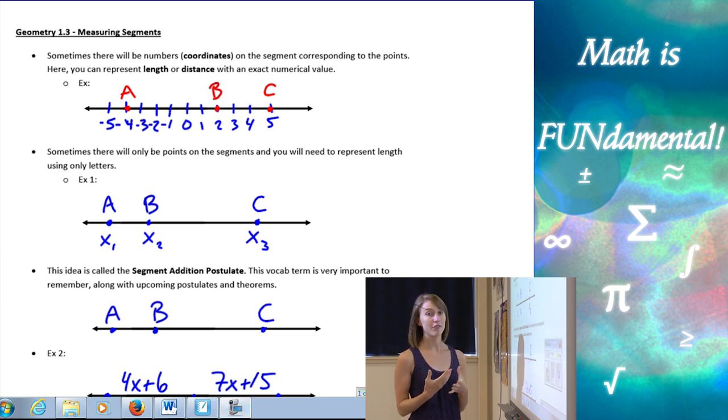So we're just going to start off by going through some examples. First, we have an example here with a line with points A, B, and C and numbers on the line, real numbers. Sometimes we're going to have real numbers on the line and if this is the case we can represent distance or length using the real numbers. And those numbers we call coordinates. They're coordinates of the points.